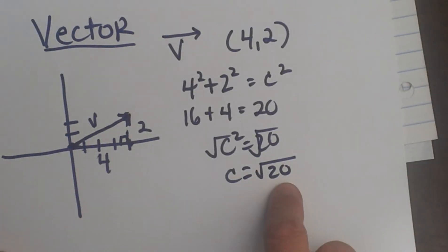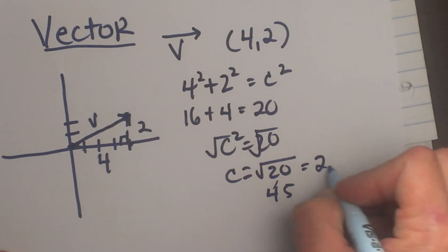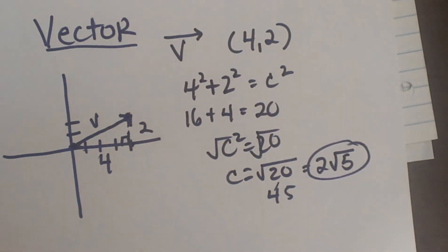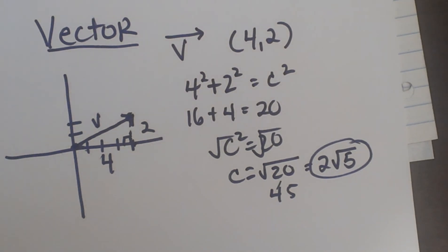So the square root of 20 is actually the magnitude of my vector. Let's simplify that. The square root of 20 equals 2 square root 5. So that's the value of the vector, and that's how you find the values of vectors. Hope this video was helpful.